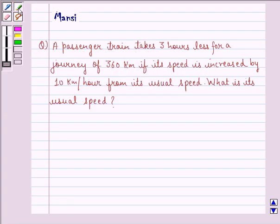A passenger train takes 3 hours less for a journey of 360 km if its speed is increased by 10 km per hour from its usual speed. What is its usual speed?